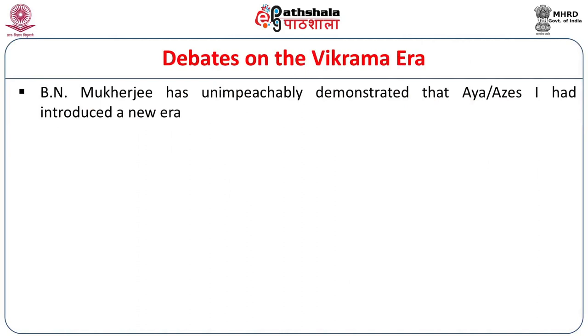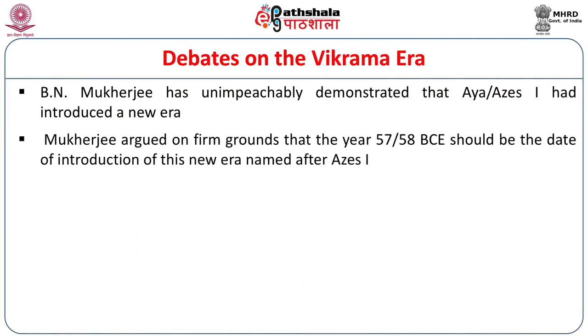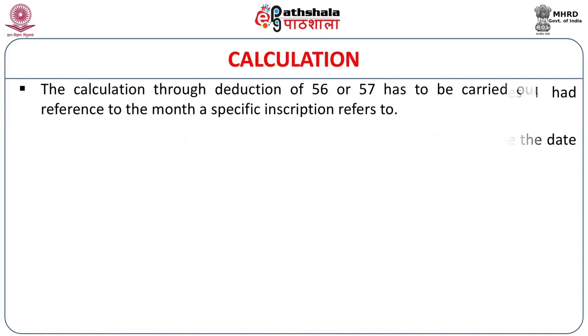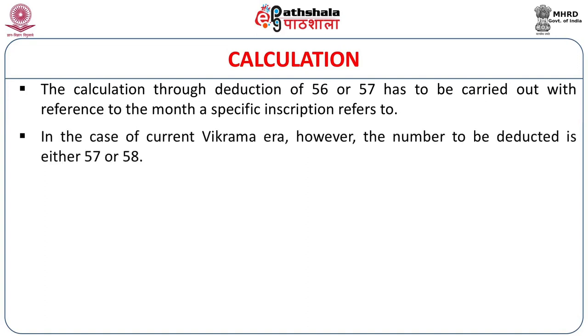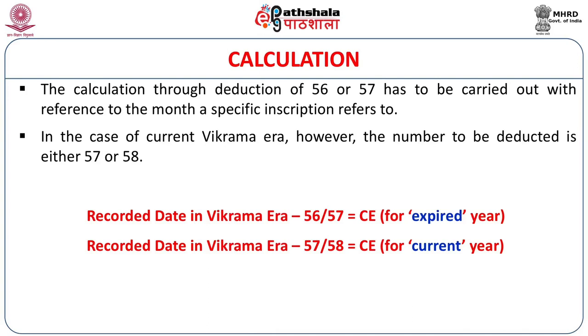This Aya is identified with Asas of the Shaka. B.N. Mukherjee has unimpeachably demonstrated that Aya or Asas I had introduced a new era. Mukherjee argued on firm grounds that the year 58 or 57 BCE should be the date of introduction of this new era named after Asas I. The calculation of the Vikrama era should be done through the deduction of 56 or 57 with reference to the month a specific inscription refers to.